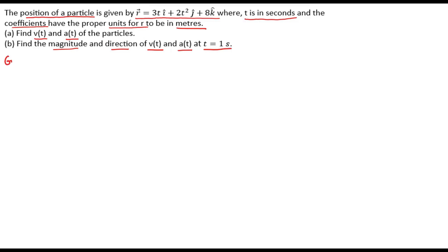So first of all let's write the given data. The position of the particle is given as r vector equal to 3t i cap plus 2t squared j cap plus 8k cap.